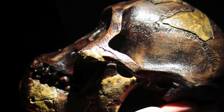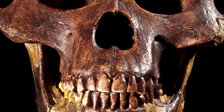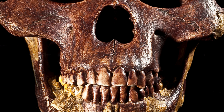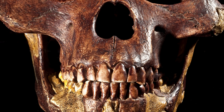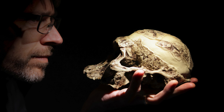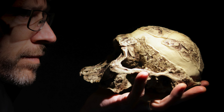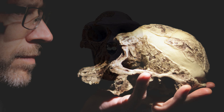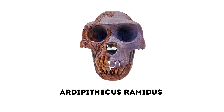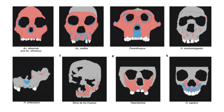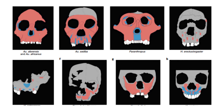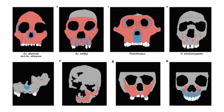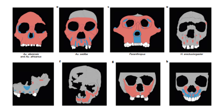However, when it came to the parts of the face related to chewing, there were distinctions. Australopithecus afarensis had a robust chewing system indicated by large cheekbones and strong arches, suggesting they had a diverse diet. On the other hand, Ardipithecus ramidus had a face more similar to chimpanzees, with vertically short and lightly built cheekbones and arches.